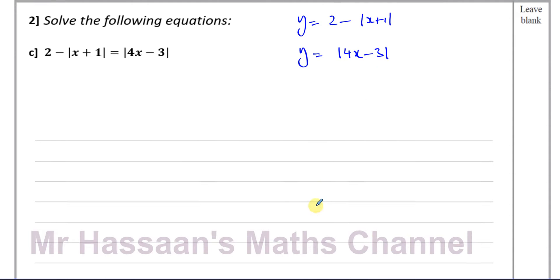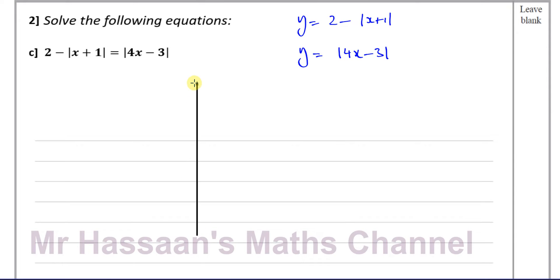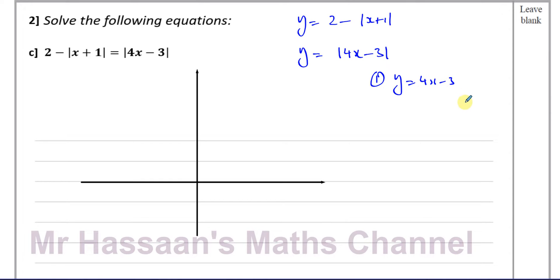Sketching the modulus of (4x-3) is not too difficult. If we draw our axes and first imagine drawing y equals 4x-3 as if there is no modulus sign, then we know this has a gradient of 4, passes through -3 on the y-axis when x=0, and crosses the x-axis at x = 3/4 (since 4x=3 gives x=3/4).